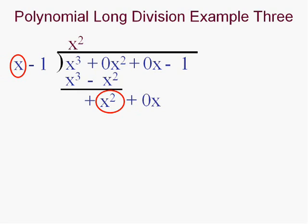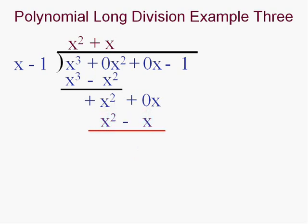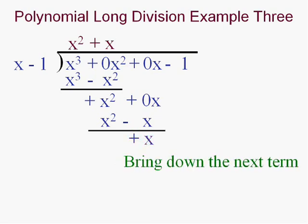My next guess is to bring down the next term and make another guess. Looking at the largest terms. I'm thinking x goes into x squared x times. So write it neatly. Once again you can see why you need those missing terms. And we'll multiply. x times x minus 1. And after you multiply you always subtract. And in this case once again we're subtracting a negative. Be careful. We get a positive.